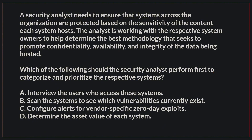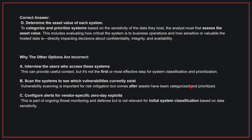The correct answer is D: determine the asset value of each system. To categorize and prioritize systems based on the sensitivity of the data they host, the analyst must first assess the asset value. This includes evaluating how critical the system is to business operations and how sensitive or valuable the hosted data is, directly impacting decisions about confidentiality, integrity, and availability.